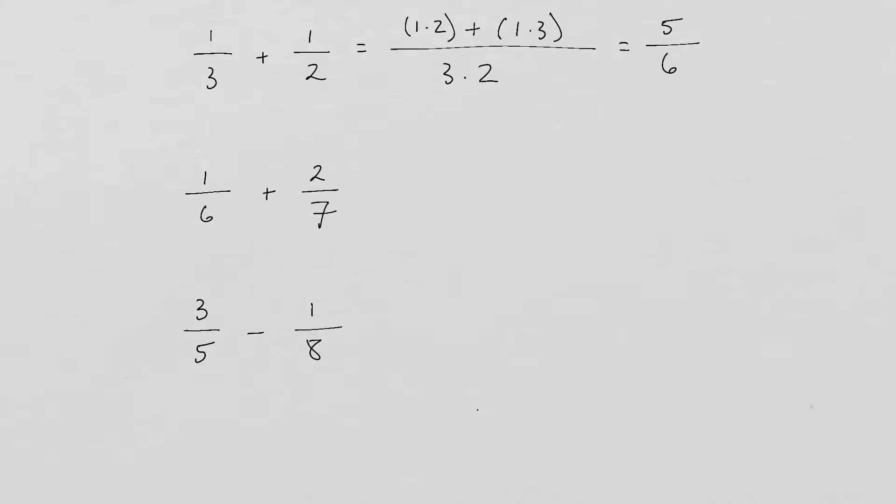Once again, for the second problem, 1/6 plus 2/7, we're going to simply multiply 1 times 7 plus 2 times 6. That's going to be our numerator. Our denominator we just go straight across. So for our numerator we have 1 times 7 plus 2 times 6 divided by 6 times 7.